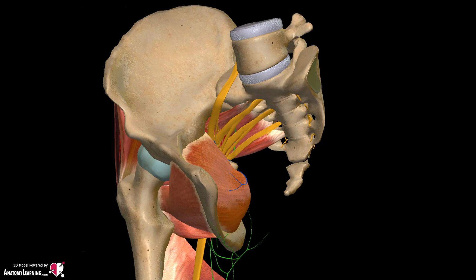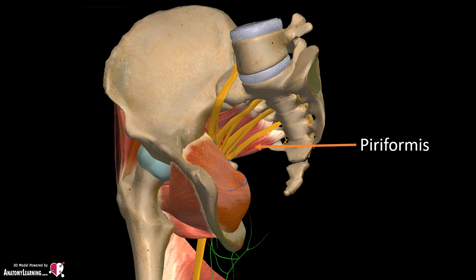This is a view of the sacral plexus through the pelvis. The sacral plexus lies in the posterior pelvic wall, behind the pelvic fascia, and rests on the piriformis muscle. The nerves of the sacral plexus can take three different courses. The majority of the nerves leave the pelvis via the greater sciatic foramen, either above or below the piriformis.